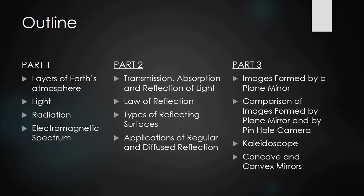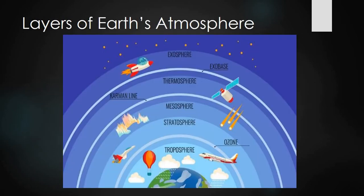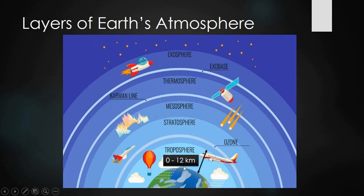Let's start Part 1 with the layers of Earth's atmosphere. What you see in front of you is Earth's atmosphere with its 5 layers. The first layer is the troposphere. It extends from the surface of the Earth — where aeroplanes fly, where clouds are, and where all of us live. Its range is from 0 to 12 km above the Earth's surface.